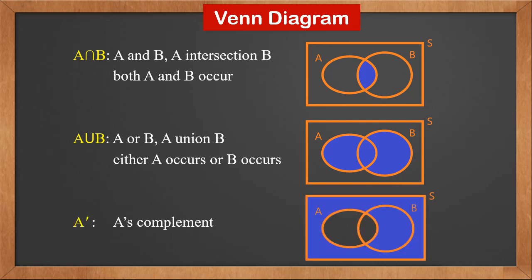A dash is called A's complement. It is the area outside A, which means event A doesn't occur.